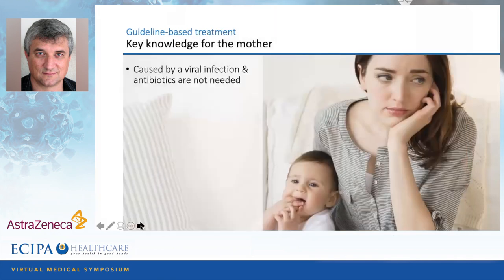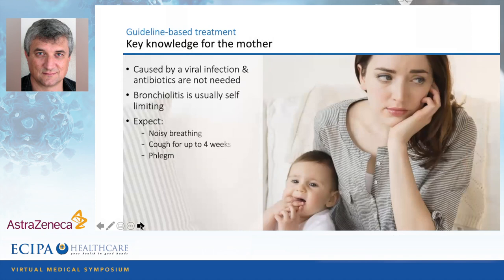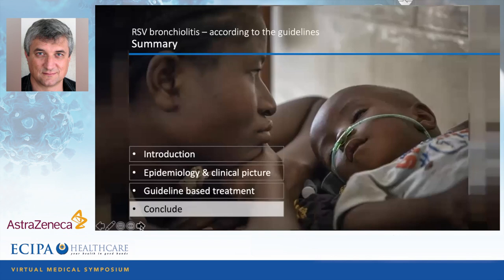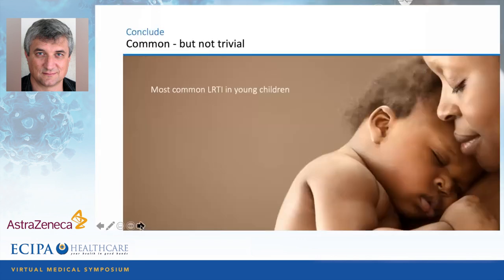The most important thing to offer the mother when she leaves your room is to inform her that this is a viral infection — no antibiotics are needed — but it's self-limiting. She should expect noisy breathing, a cough for three to four weeks or sometimes even longer, mucus with bronchorrhea and rhinorrhea, and she should manage these without excessive panic. She should seek further help if there's increasing respiratory distress, if the child really doesn't drink, if there's onset of high fevers, or if a wet cough persists for more than four weeks.